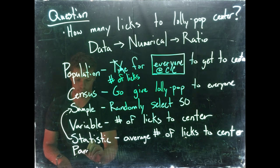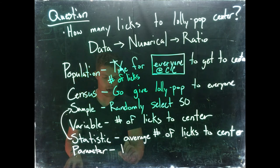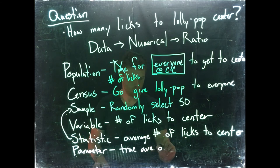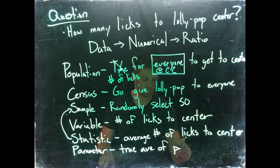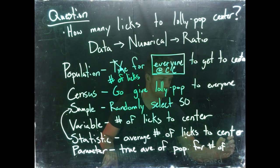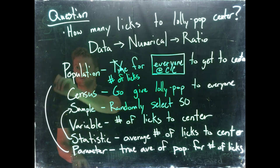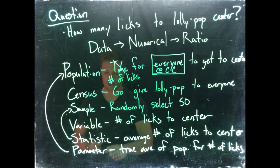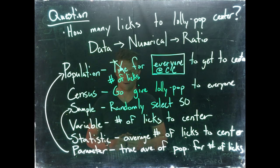The parameter—so the statistic we would get from the sample—let's look at the parameter. This would be the true average of population for number of licks that comes from the population. Now a lot of times we can get the statistic and we can estimate what the parameter is.